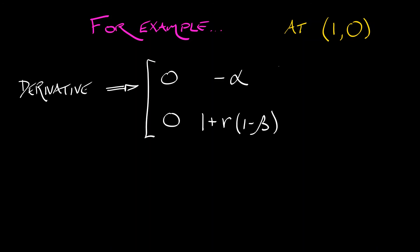For example, if we consider the equilibrium at (1, 0), if we substitute into that derivative x equals 1, y equals 0, we get the matrix [0, -alpha; 0, 1 plus r times quantity 1 minus beta].